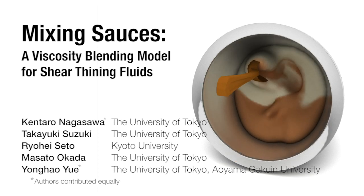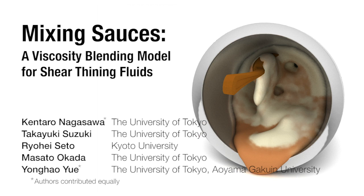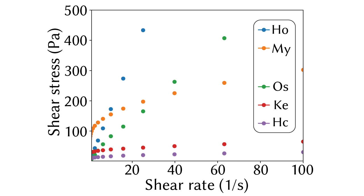We are interested in the flowing properties of shear thinning fluids, especially fluid-like foods. We used a laboratory device, ReaMeter, to measure the relationship between the stress and strain rate of such materials.